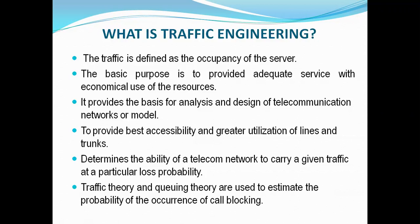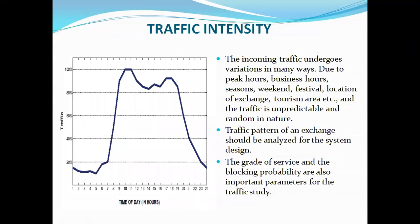We will take help of traffic theory and queuing theory to calculate the blocking probability, which is the Erlang B formula. As shown here, traffic in Erlangs is normalized — its value is one, 0.8, etc. This is traffic versus time of day in hours. When it is 1 a.m. to 2 a.m. at night, traffic intensity is quite low because few people call at that time.